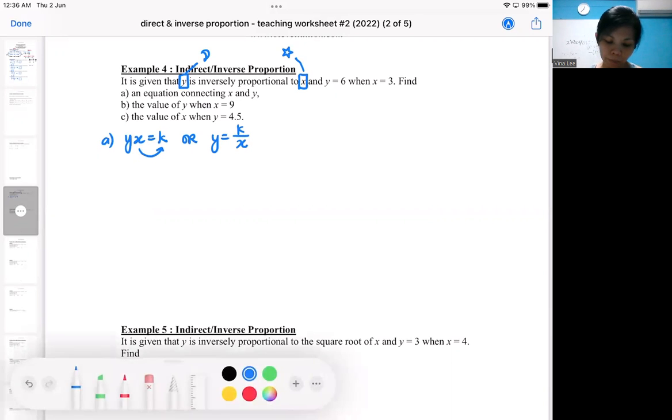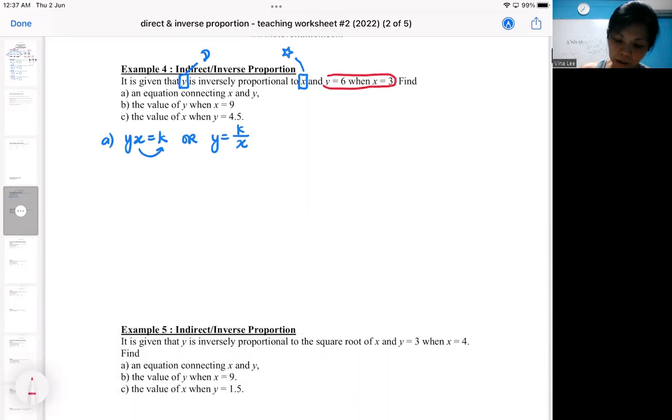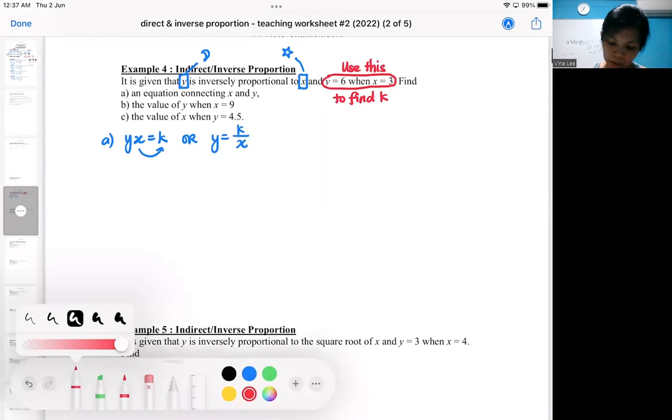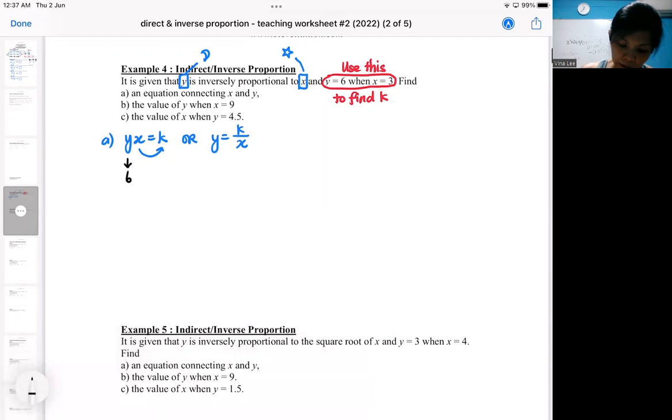It will be the same situation, they will always give you a set of values to find k. Some of you might feel that if I'm given this, if I continue with the setup, this is a 6 and then this is a 3, it's actually easier for you to find k.